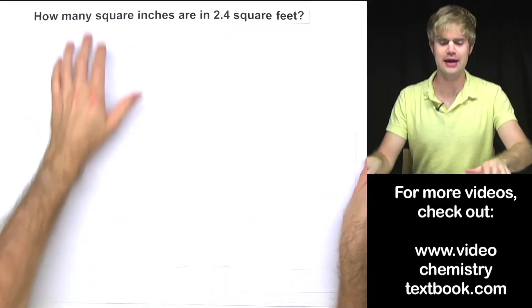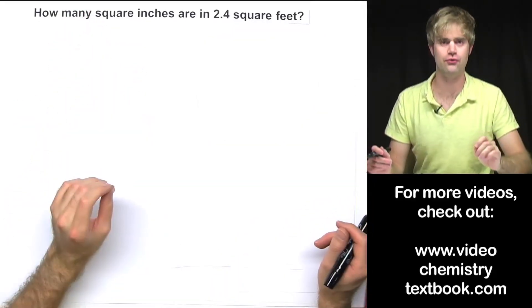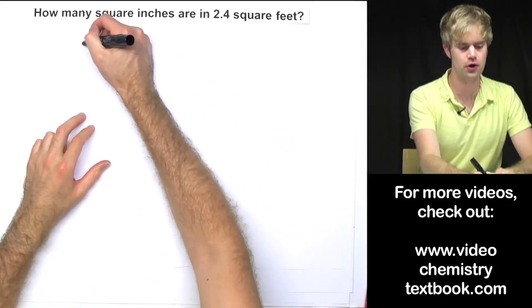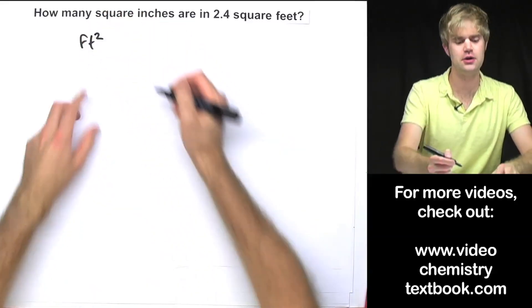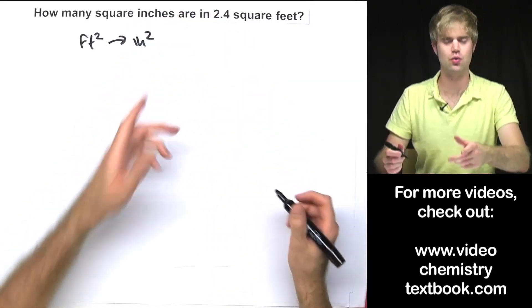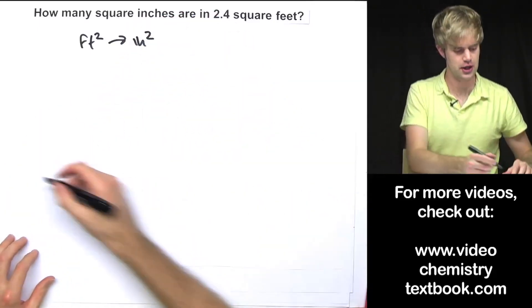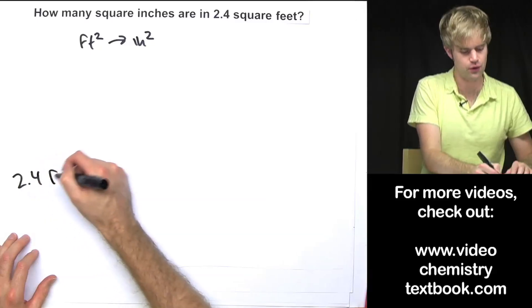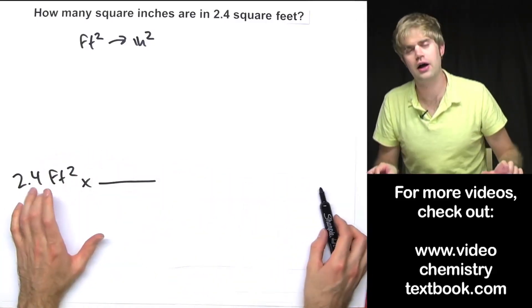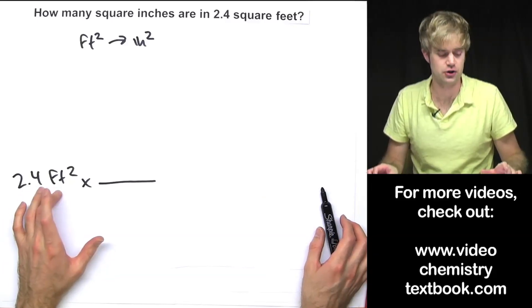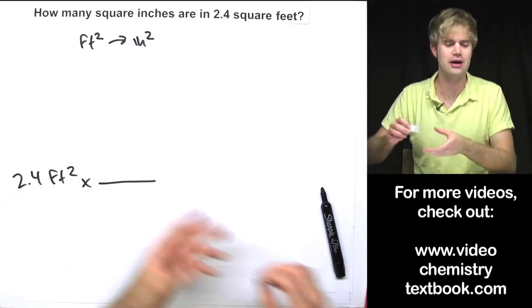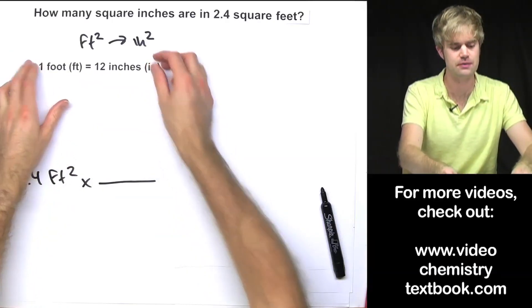This question asks how many square inches are in 2.4 square feet? So we're going to be converting between feet squared and inches squared, starting with 2.4 square feet. We're going to want to multiply by a conversion factor to get rid of the square feet, so we need to find a relationship between feet and inches.